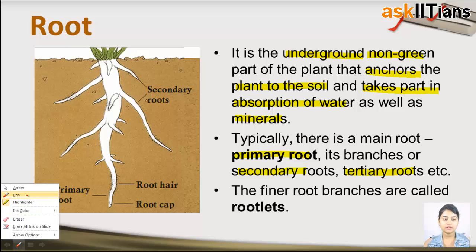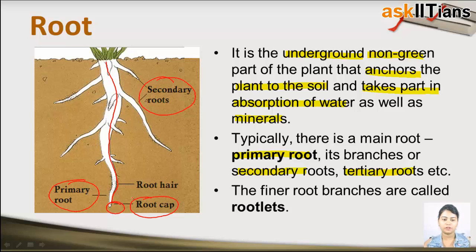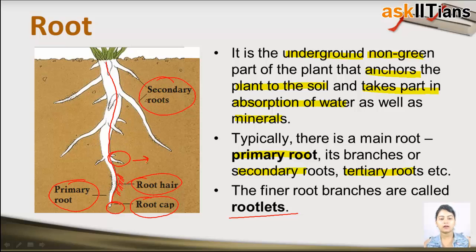Let me encircle all the parts. This is the primary root — the main one. Its branches are the secondary roots. It has a root cap at the tip and very small hairy structures called root hair. In some cases, rootlets — the fine branches — are also present.